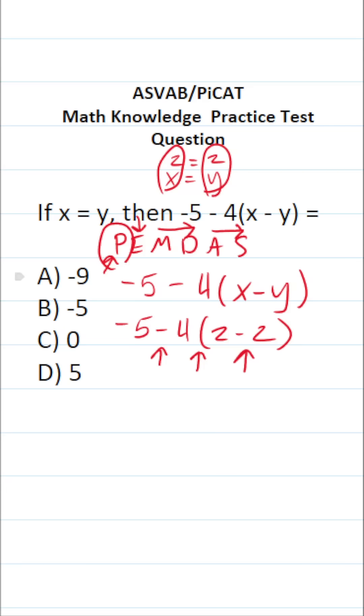According to the order of operations, we're going to do what's in parentheses first. This becomes -5 - 4... 2 minus 2 is 0.